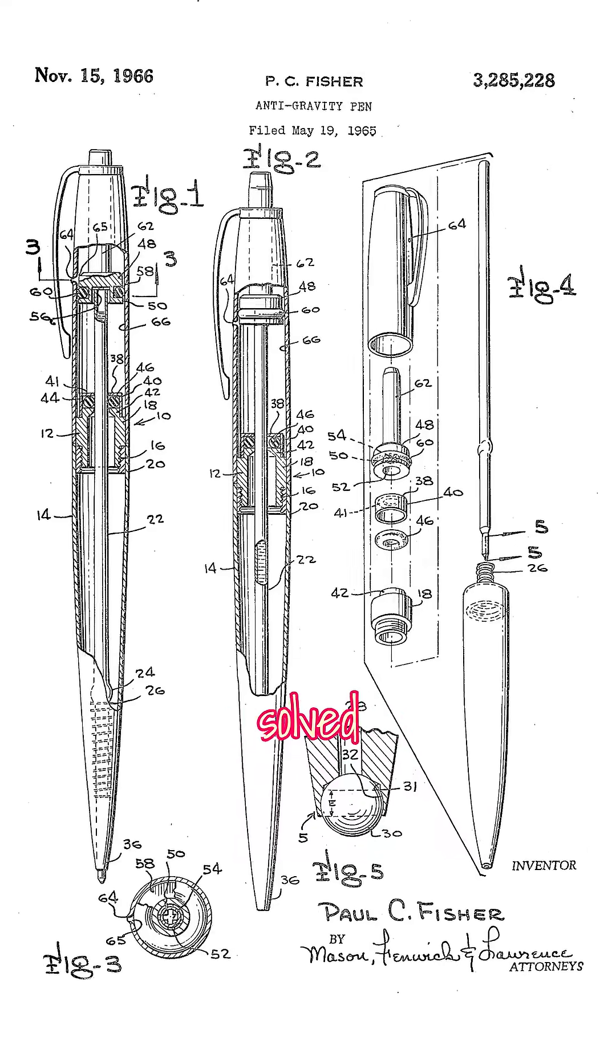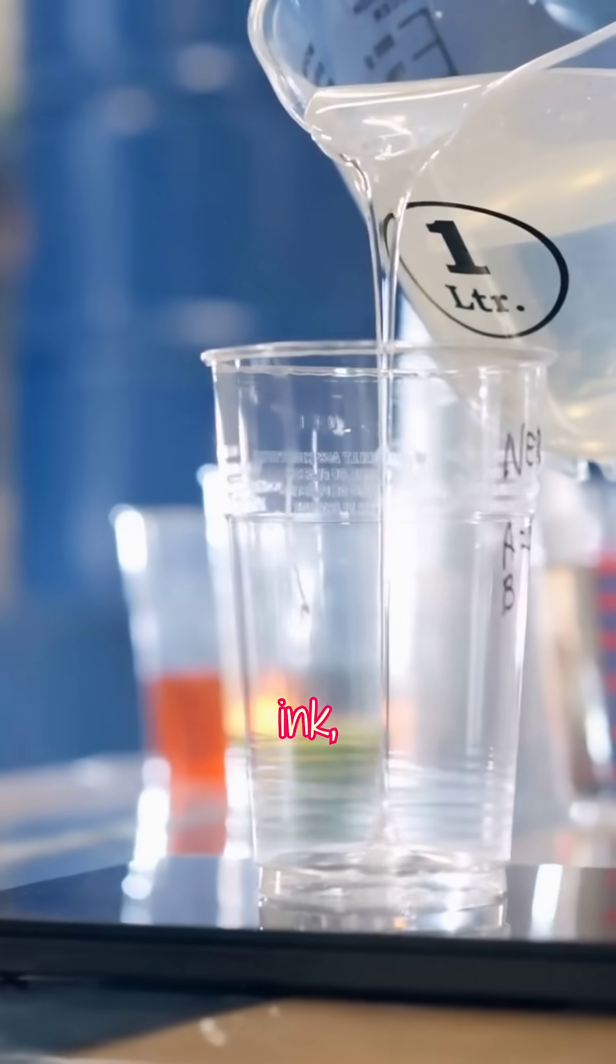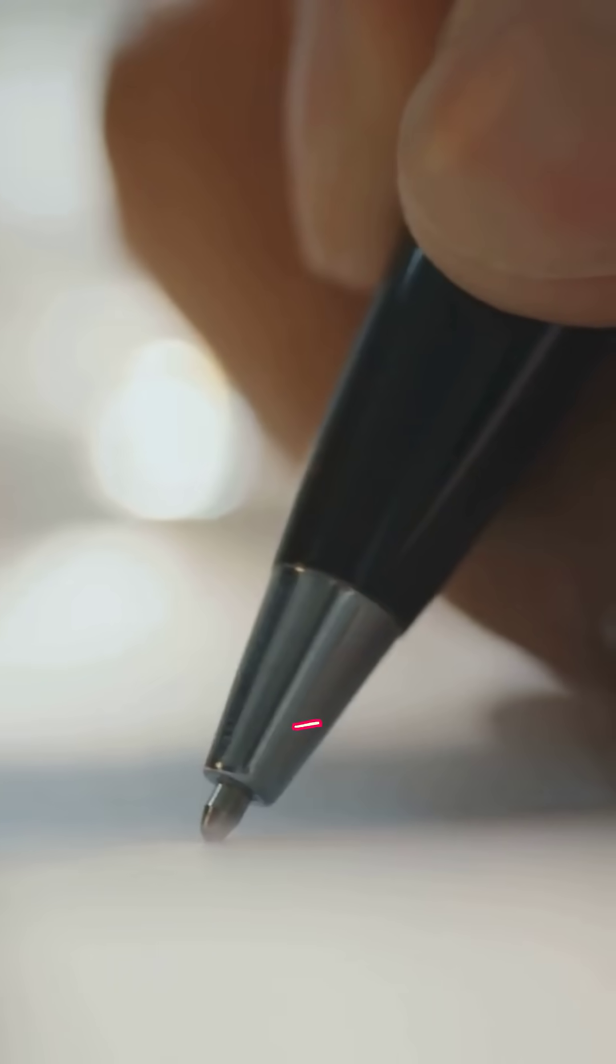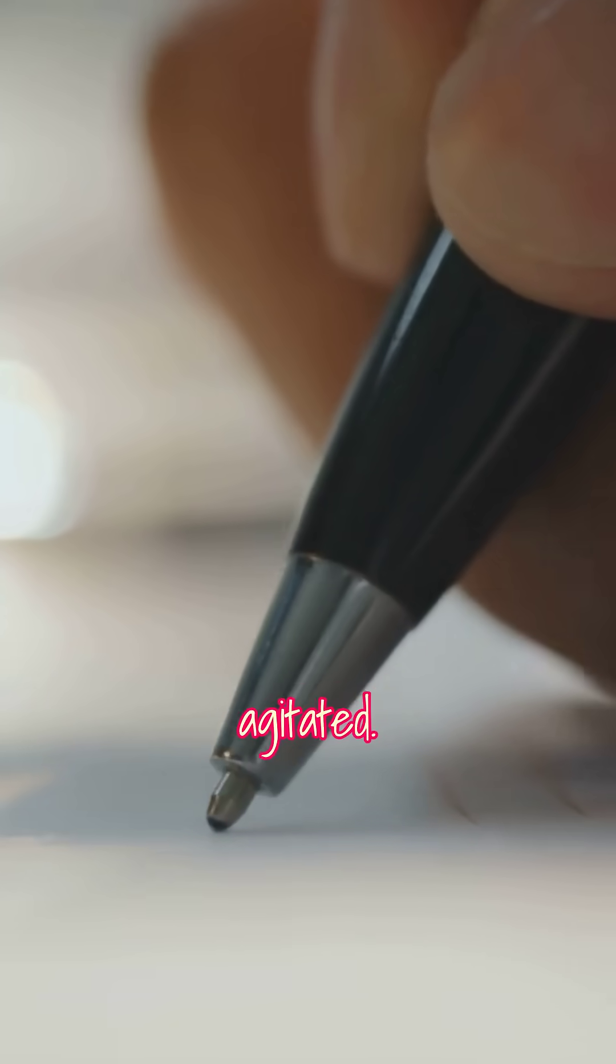He eventually solved the leak problem by adding a bit of resin to the ink, making it thixotropic, a gel that becomes fluid when agitated.